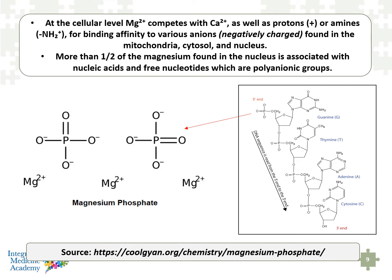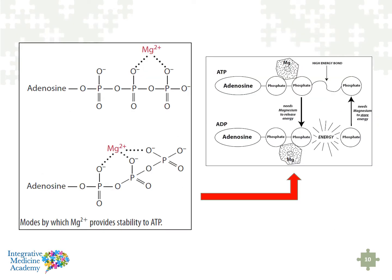If we think about what's in the nucleus, that would be our nucleic acids that make up DNA and RNA. It turns out that nucleic acids are stabilized by the presence of magnesium. Also critically, magnesium forming a bond with an anion will help to stabilize ATP. The adenosine triphosphate produced from mitochondrial activity through the electron transport chain becomes stabilized in the presence of magnesium, so that the ATP has a chance to get out of the mitochondria and be functional elsewhere in the cell.